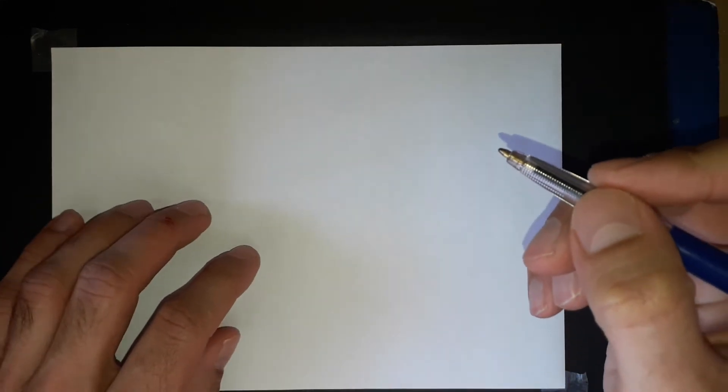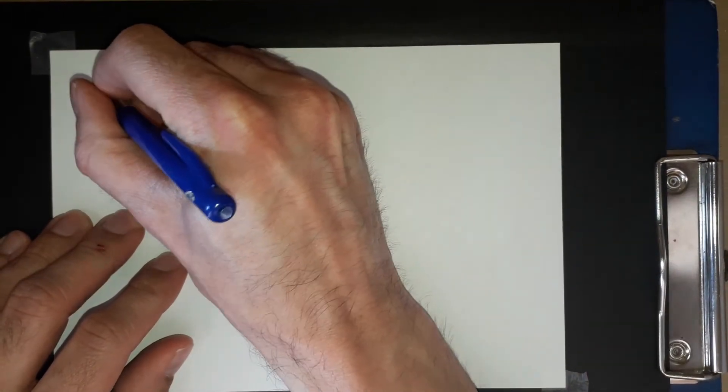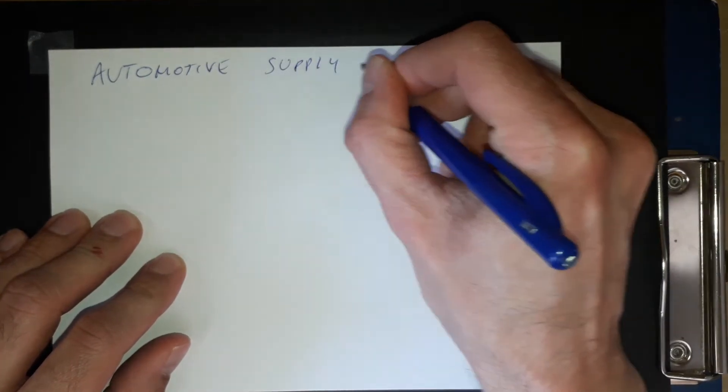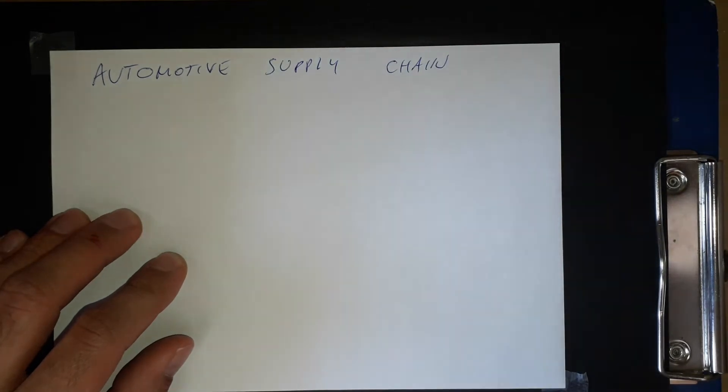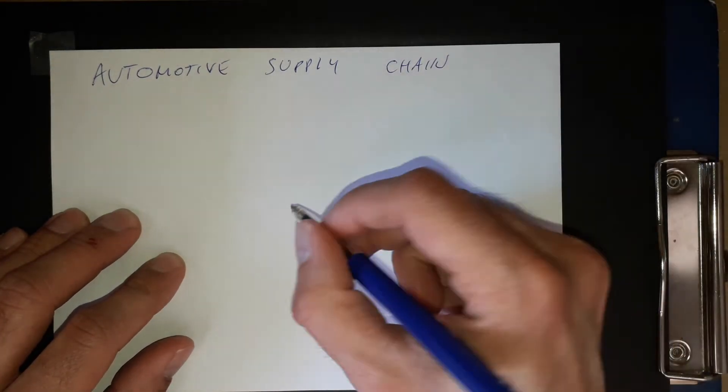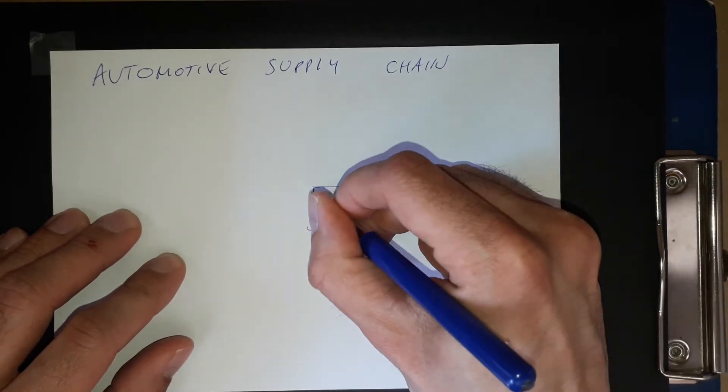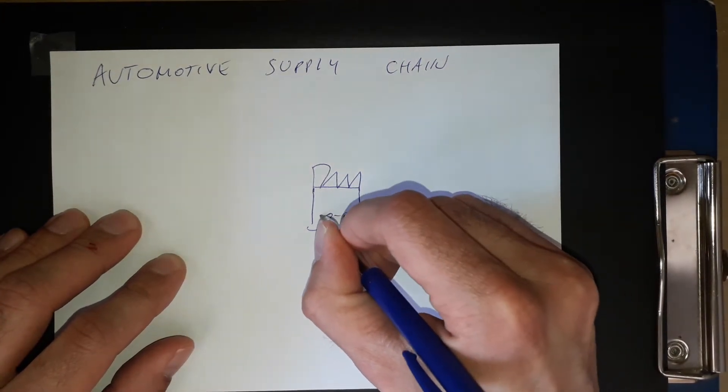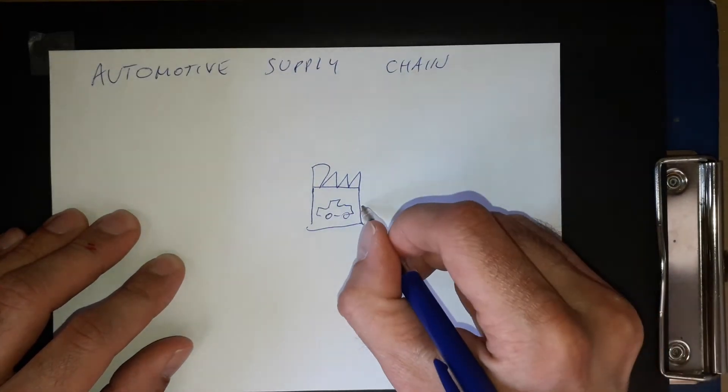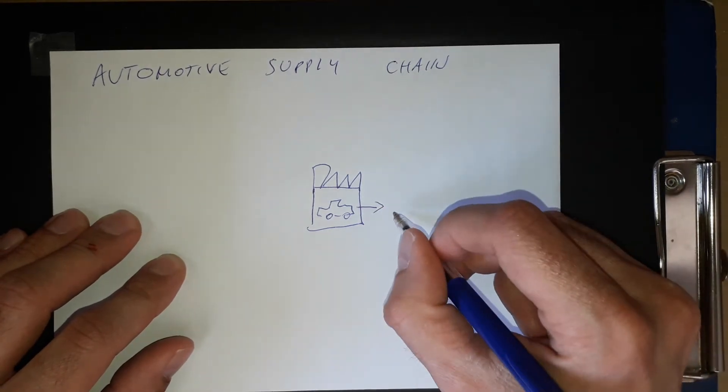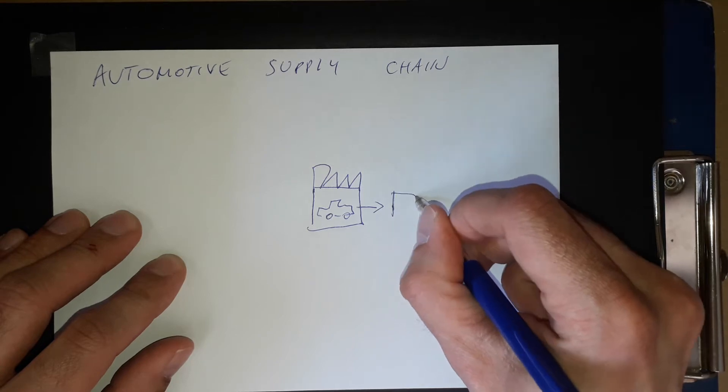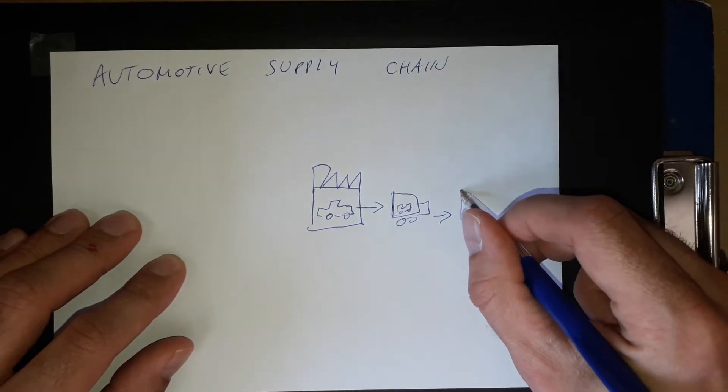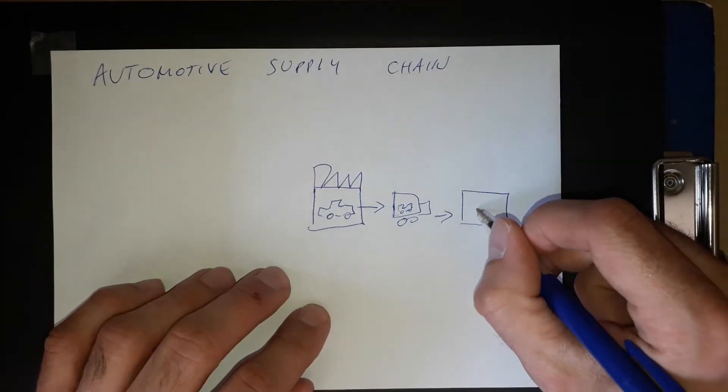Okay, welcome. Today, supply chain easily explained. So there is a car factory - let's make it as the main point of this picture. This is producing the cars and transporting them to the selling facilities.